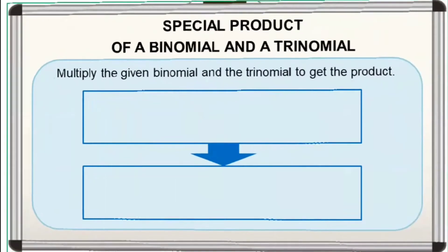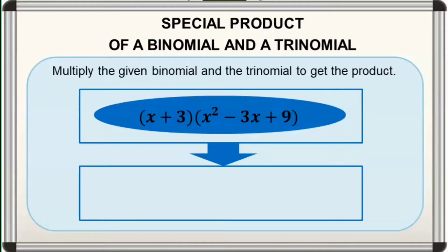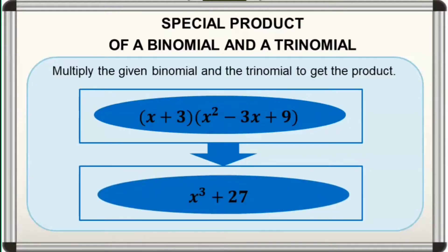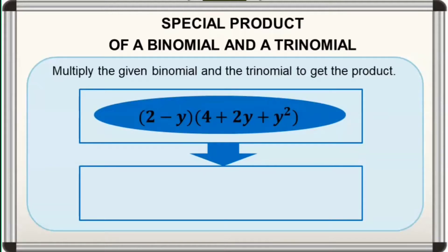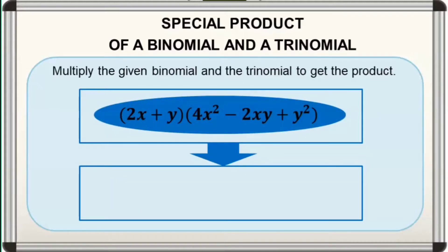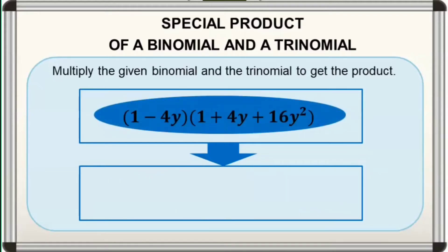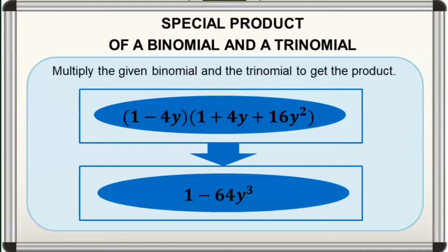We'll start with this simple activity. Multiply the given binomial and trinomial to get the product. For the first one, it is equal to x cubed plus 27. For the second one, it is equal to 8 minus y cubed. For the third one, it is equal to 8x cubed plus y cubed. And for the fourth one, it is equal to 1 minus 64y cubed.